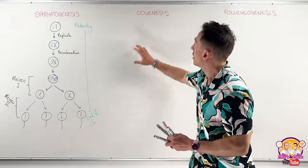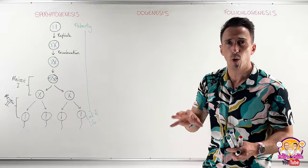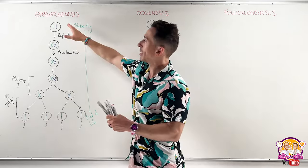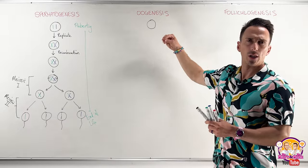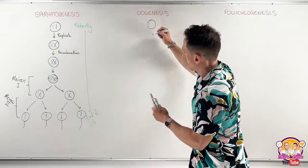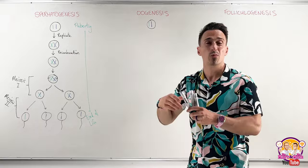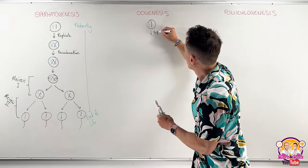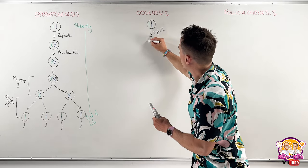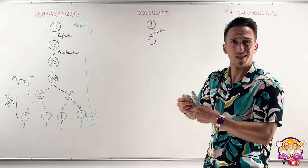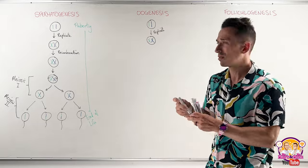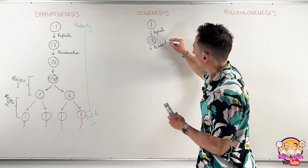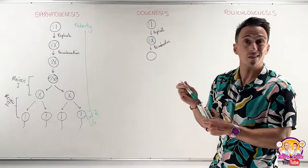Now I want to compare this with oogenesis, which is a similar process but with some important differences. We have a stem cell that begins — not a spermatogonium, but an oogonium, an early egg. It also contains 23 pairs of chromosomes, and it does the same thing: it replicates and doubles up, and it also undergoes recombination, just like in the male reproductive system.